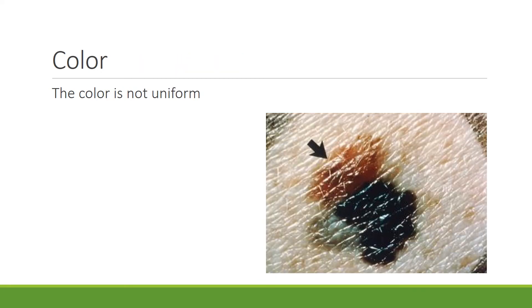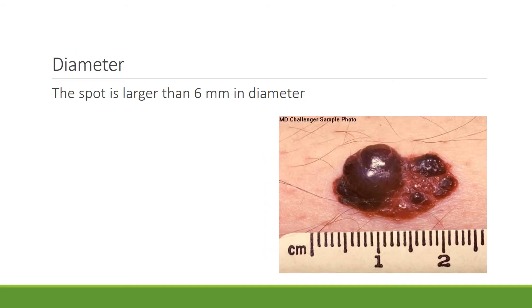The C stands for color — when the color is not uniform it can be problematic. The D stands for diameter. Any time the spot is larger than six millimeters in diameter it needs to be checked; six millimeters is about the size of a pencil eraser.